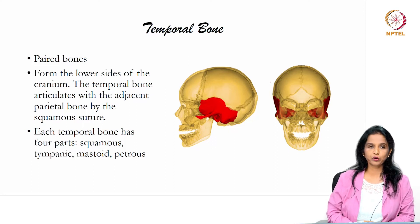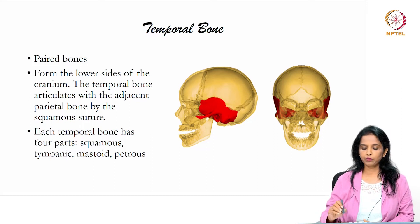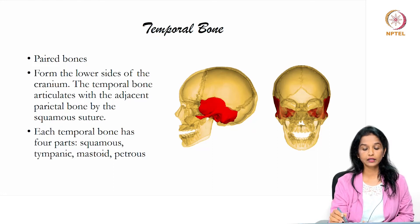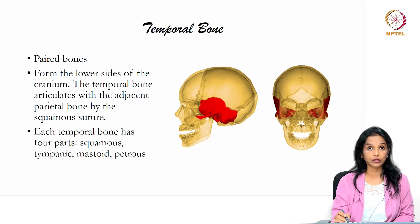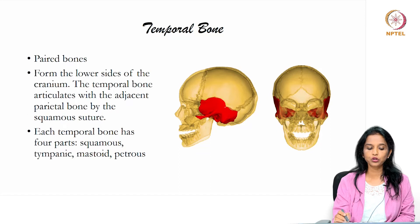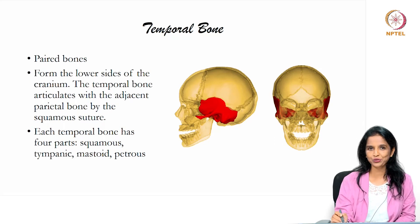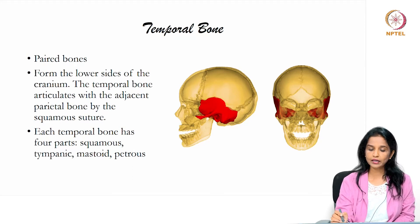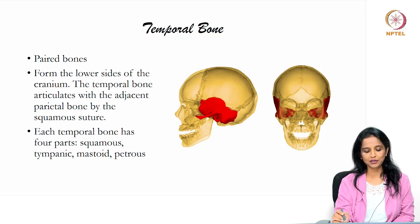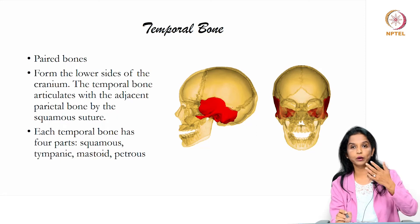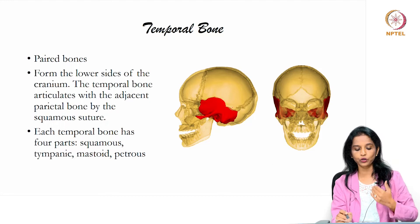Next is the temporal bone, another paired bone of the cranium. The temporal bone forms the lower sides of the cranium. It articulates with the adjacent parietal bone by the squamous suture. Each temporal bone has four parts: the squamous part, the tympanic part, the mastoid part, and the petrous part. The squamous part is a flattened area.